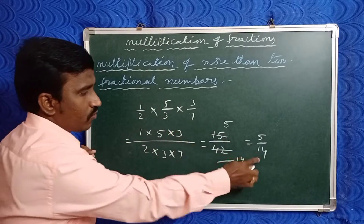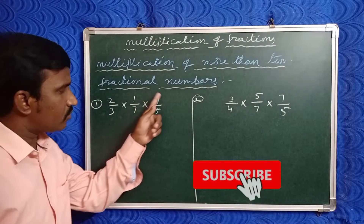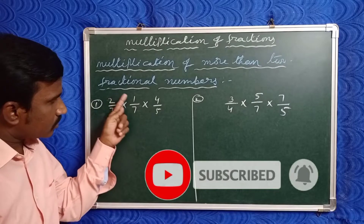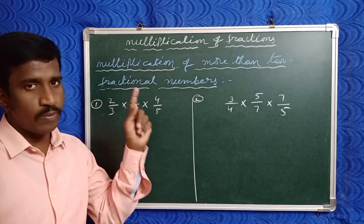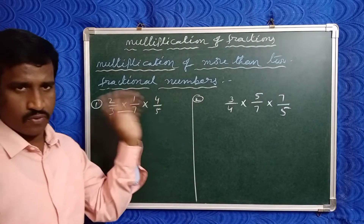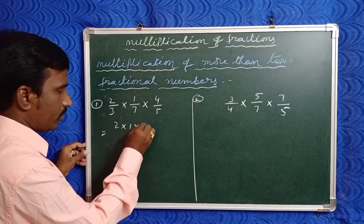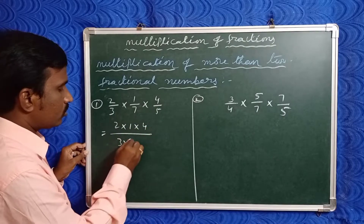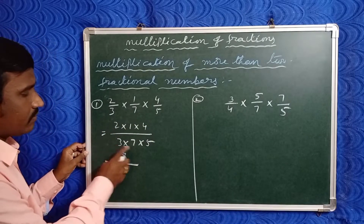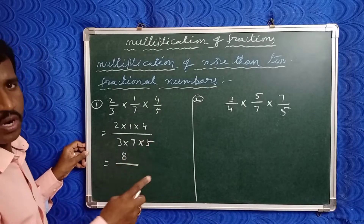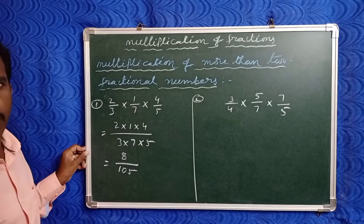Take two more examples. First: two by three into one by seven into four by five. Total numerators: two into one into four. Denominators: three into seven into five. Two ones are two, two fours are eight. Denominators: three sevens are twenty-one, twenty-one fives are one hundred five. So the answer is eight by one hundred five.